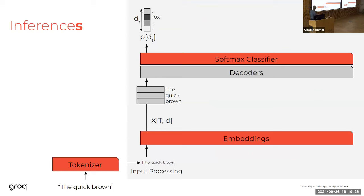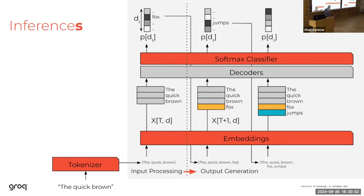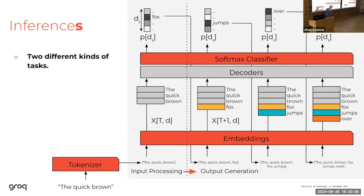Here's an example of an LLM trying to predict the next word — a task called inference. We provide some context, starting with 'the quick brown,' which goes into the input processing stage of the LLM. The English text goes to a tokenizer, which converts it into a format more useful for machine learning algorithms. The system predicts that the next word is going to be 'Fox,' doing quite a bit of matrix multiplication to work that out, and then predicts the next word, and the next. This is all done through a sequence of decoders — that's the core thing we're trying to accelerate.